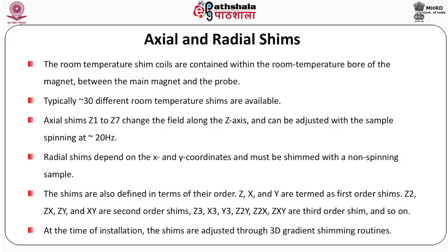There are axial and radial shims. The room temperature shim coils are contained within the room temperature bore of the magnet between the main magnet and the probe. Typically 30 different room temperature shims are available. Axial shims Z1 to Z7 change the field along the Z axis and can be adjusted with the sample spinning at approximately 20 Hz. Radial shims depend on the X and Y coordinates and must be shimmed with a non-spinning sample. Shims are also defined by their order: Z, X, and Y are first order shims; Z-squared, ZX, ZY, and XY are second order shims; and Z3, X3, Y3, Z2Y, Z2X, ZXY and so on are third order shims. At the time of installation, the shims are adjusted through 3D gradient shimming routines.